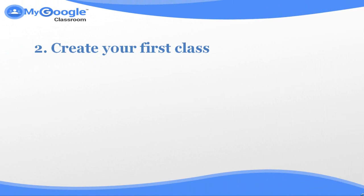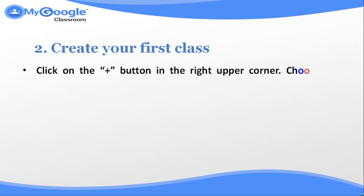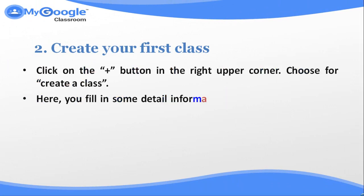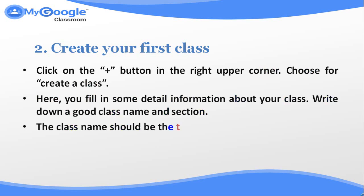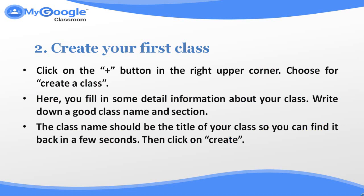Number two: create your first class. Click on the plus button in the upper right corner and choose 'Create a class.' Enter some detailed information about your class — write down a good class name and section. The class name should be the title of your class so you can find it easily. Then click on Create.